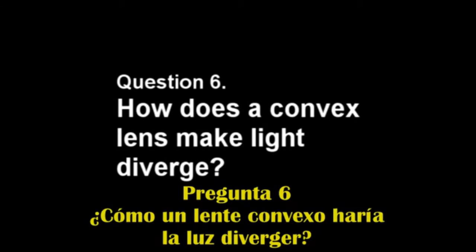Question 6. In a similar vein, how does a convex lens make light diverge?